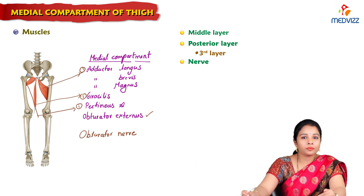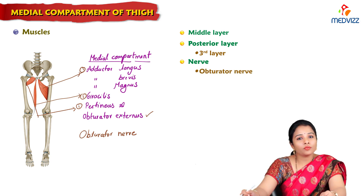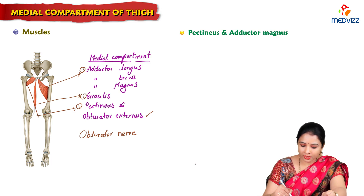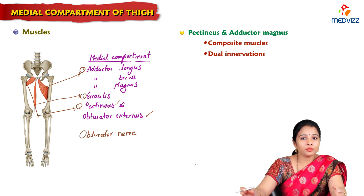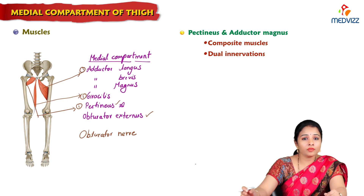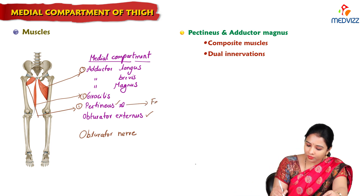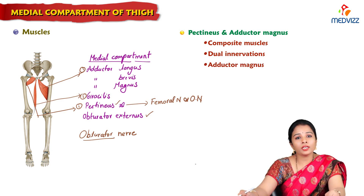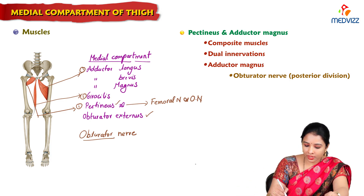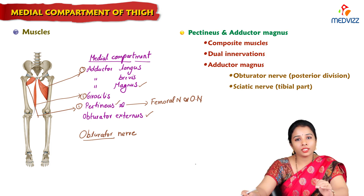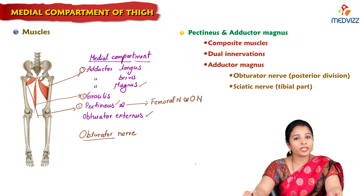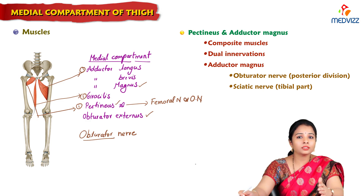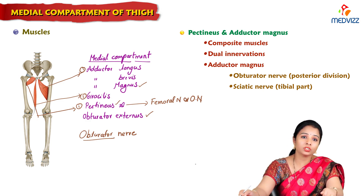All the muscles of the adductor compartment of the thigh are supplied by the obturator nerve. However, two muscles — pectineus and adductor magnus — are composite muscles, hence they have dual supply; they are hybrid muscles. Pectineus is supplied by the femoral nerve and obturator nerve. Adductor magnus is supplied by the obturator nerve (posterior division) and also the tibial part of the sciatic nerve. The ischial part of adductor magnus comes under the posterior/hamstring compartment, supplied by the tibial part of sciatic nerve, while the rest is supplied by the posterior division of obturator nerve.